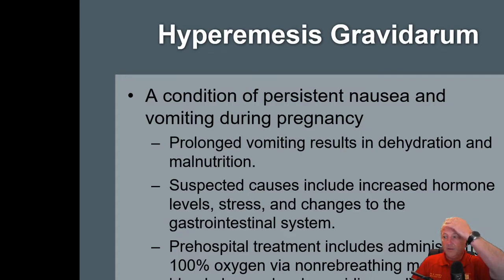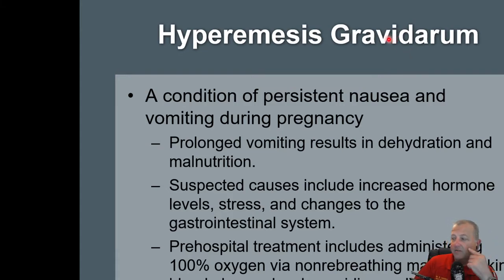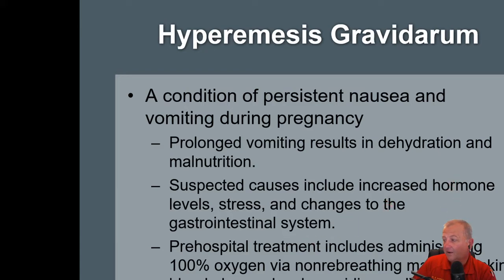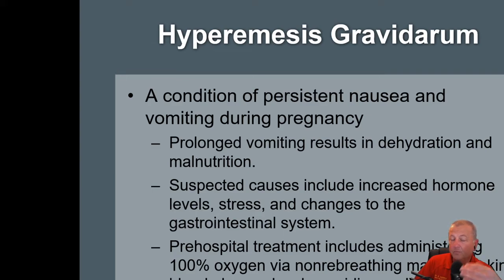Hyperemesis gravidarum — this is your morning sickness, but really bad morning sickness. Prolonged vomiting results in dehydration and malnutrition. This could be caused by hormone levels that are trying to support the baby. These patients need IV fluids.